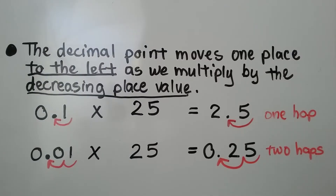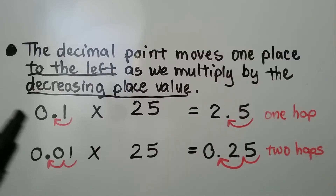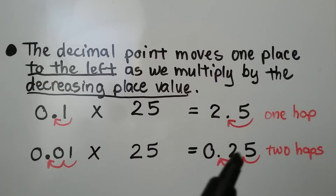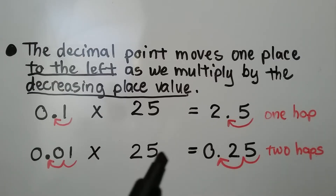We know 1 times any number is that number — it keeps its identity. So when we're multiplying by tens, hundreds, thousands, or by tenths, hundredths, thousandths, the product is going to have the same numbers as the factor.